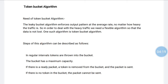A simple leaky bucket algorithm can be implemented using a FIFO queue. The FIFO queue holds the packets. If the traffic consists of fixed-size packets, the process removes a fixed number of packets from the queue at each clock tick. If the traffic consists of variable-length packets, the fixed output rate must be based on the number of bytes or bits. Initially, the leaky bucket algorithm can transfer data at a constant fixed rate.